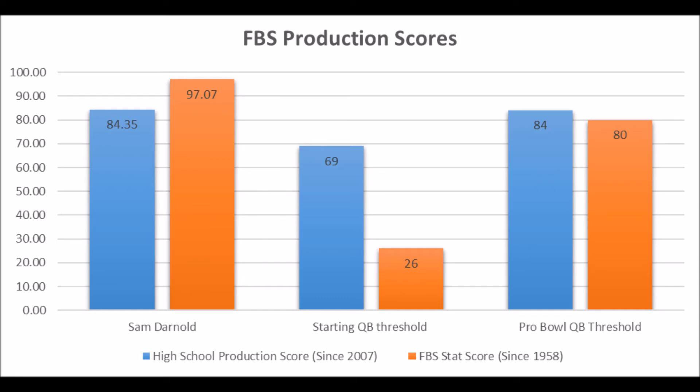So Sam Darnold, from the get-go, hits every thing you're looking for in his high school production score. On top of that, his FBS production score — which is basically his best single-season FBS production score — is 97.07 out of 100, which pretty much hits the long-term starting quarterback threshold and the Pro Bowl quarterback threshold as well.